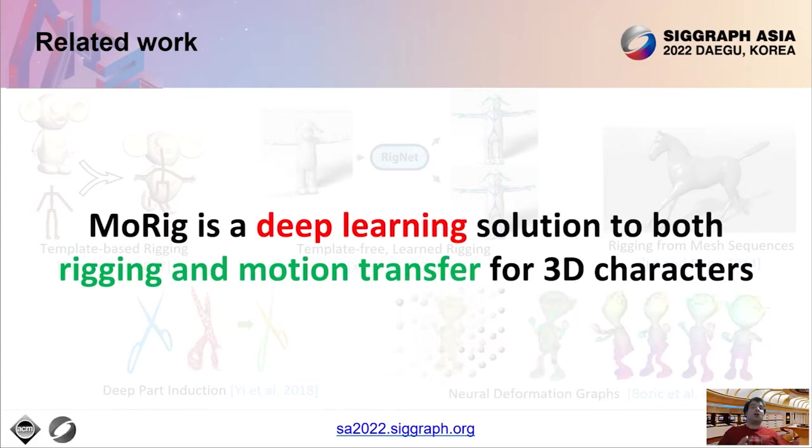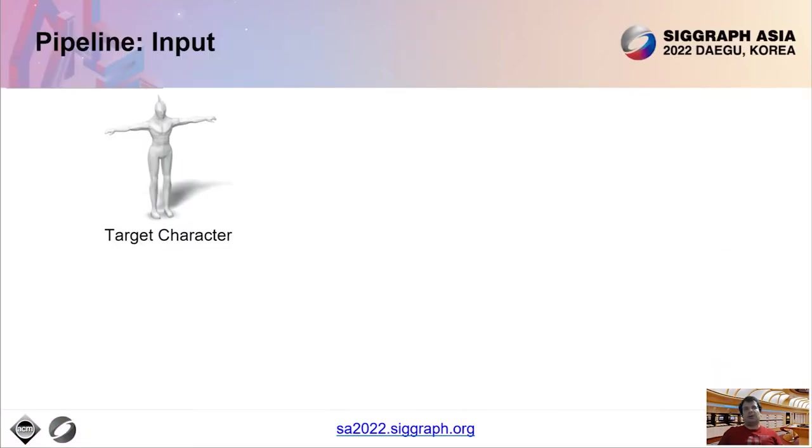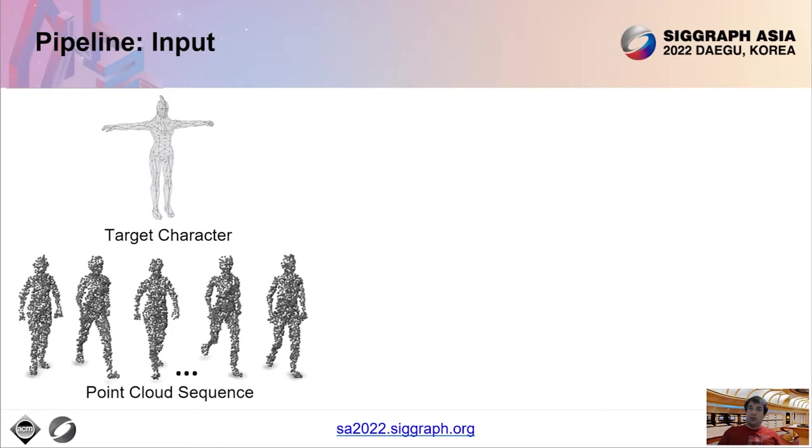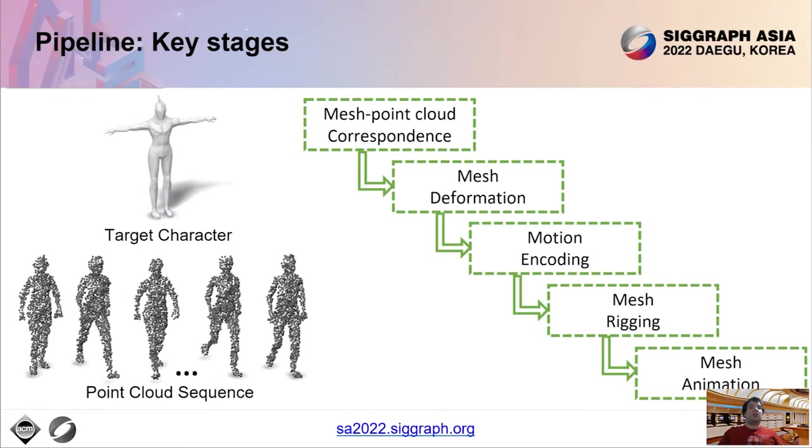MoRig instead offers a complete deep learning solution to rigging 3D character models as well as animating them through motion transfer from point clouds. Let's now discuss our method pipeline. Our input is a target character in the form of a polygon mesh and a sequence of point clouds captured from a sensor.